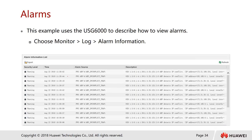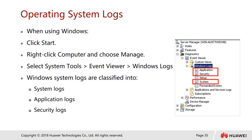Alarm logs include warnings and critical alarms. For example, an IP conflict is one of the more severe warnings, and all such alerts will appear in the alarm section.